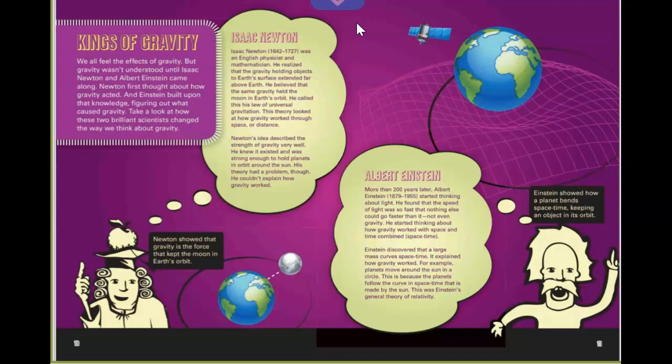So, along came Albert Einstein, more than 200 years later. Albert Einstein was born in 1879, and he died in 1955. He started thinking about light. He found that the speed of light was so fast that nothing else could go faster than it, not even gravity. He started thinking about how gravity worked with space and time combined, space-time. Einstein discovered that a large mass curves space-time. It explained how gravity worked. For example, planets move around the sun in a circle. This is because the planets follow the curve in space-time that is made by the sun. This was Einstein's general theory of relativity. Amazing.